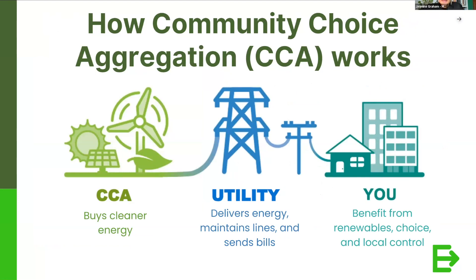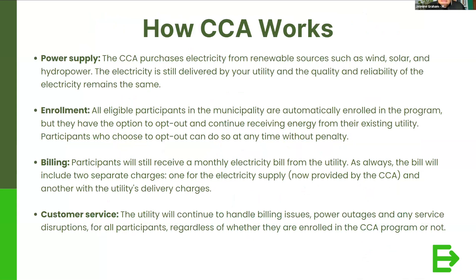Now we'll get into the mechanics of how community choice aggregation programs work. At its most simple, the CCA buys cleaner energy. Because this is a bulk purchase, you are getting competitive rates. Oftentimes you can have savings, but they're not guaranteed because it is a fixed rate while the utility's rate goes up and down — it's variable. Your utility continues to deliver your energy, maintains the lines, and sends you your bills. You, the end-use consumer, benefit from renewables and choice and local control.